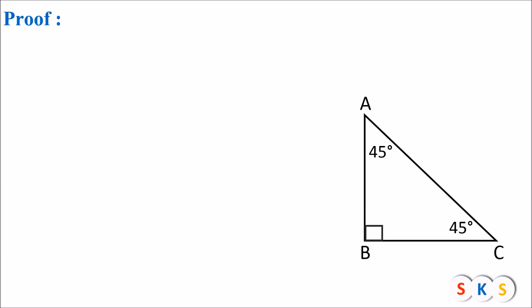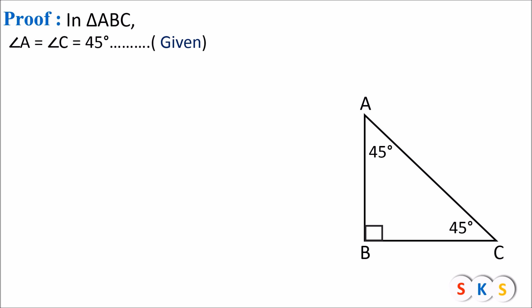Now let's see the proof. In this figure, angle A is 45 degrees and angle C is also 45 degrees, therefore angle A equals angle C, both equal to 45 degrees. We know that if any two angles of a triangle are equal, then the sides opposite to them are also equal. The side opposite to angle A is BC.